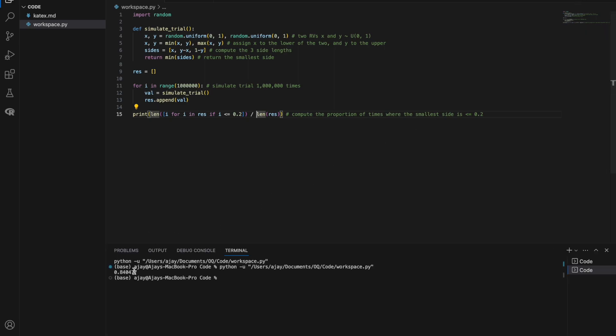All right. First one, 0.8404, 0.8401, 0.839. So we're getting values very close to 0.84 because we're simulating the trial a lot of times, a million times, and proving that the results and the probability that we computed in the problem is indeed correct.